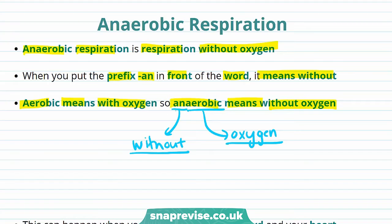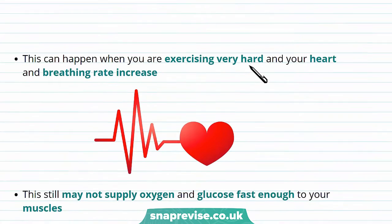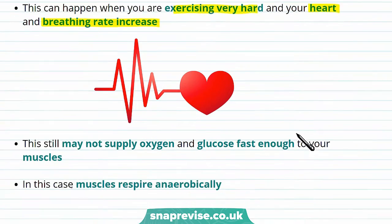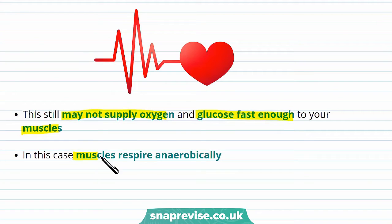We normally respire aerobically. So when does anaerobic respiration happen? Well, anaerobic respiration happens when you're exercising very hard and your heart and breathing rate increase. However, even though they increase, it still may not be enough to supply oxygen and glucose fast enough to your muscles, and because muscles need oxygen and glucose, muscles respire anaerobically.